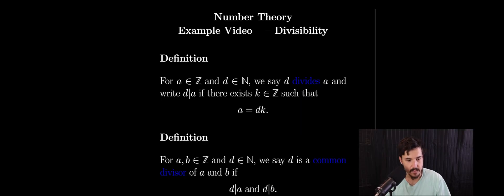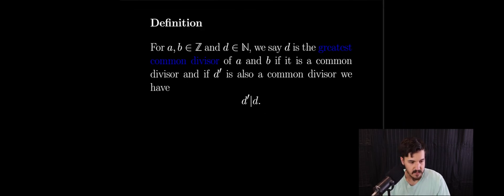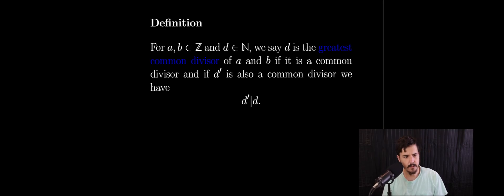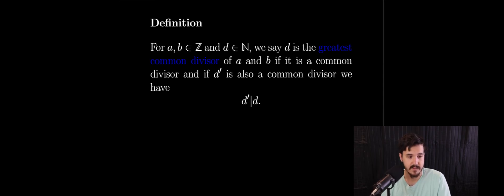Our second definition for the video is going to be the definition of a common divisor. Now if we have two integers a and b and a natural number d, we will say that d is a common divisor if d divides both a and b. Now our third and final definition for the video is going to be greatest common divisor. For integers a and b and a natural number d, we say that d is the greatest common divisor of a and b if it is a common divisor, and if d prime is also a common divisor, then d prime divides d.